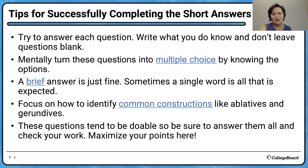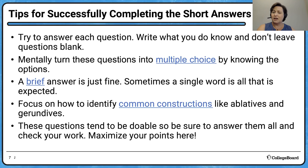Remember that a brief answer is absolutely fine. If they ask what goddess induced Aeolus to start the storm in Book 1 of the Aeneid, just write 'Juno.' Students lose points on straightforward questions by thinking they need to write a paragraph — and having incorrect information in that paragraph spoils the answer. If they're asking for a one-word answer, just give that one word. These are not paragraph answers.